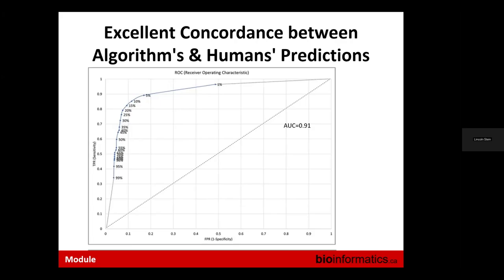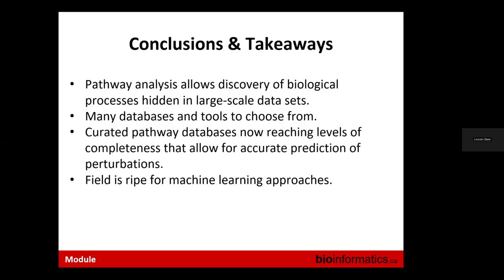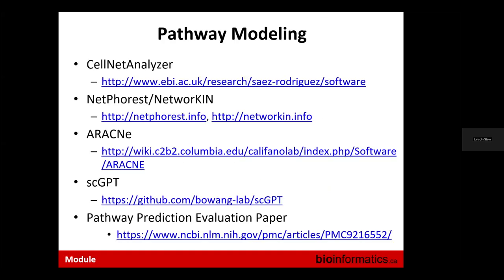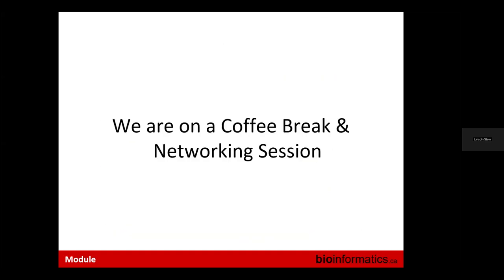Now with generative AI models, we really need to redo the whole comparison using one of those models. In summary, pathway analysis allows you to discover biological processes hidden in large-scale data sets. You have lots of databases and tools to choose from. Curated pathway databases are actually worthwhile — they've reached levels of completeness that allow you to accurately predict perturbations — and it's a very ripe field for machine learning. URLs and other resources are provided, and I'm happy to answer questions.